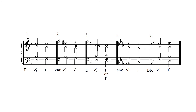Next, resolve the leading tone, which is the C sharp in the tenor voice, moving up by step to D. Then keep the common tone, the A in the soprano. Finally, the E in the bass voice — the chordal fifth — can move down by step to D, giving a doubled chordal root for a root position tonic triad, or move up by step to F sharp, resulting in a first inversion tonic triad. Either solution works.